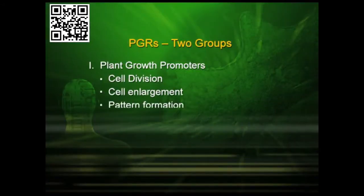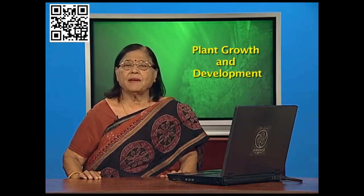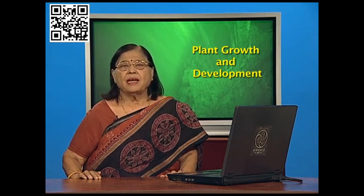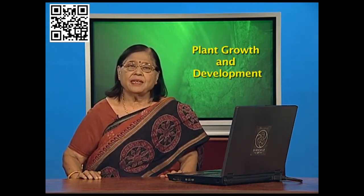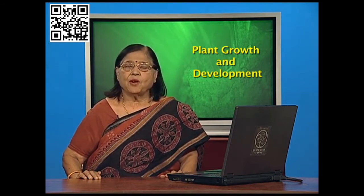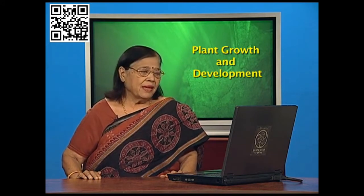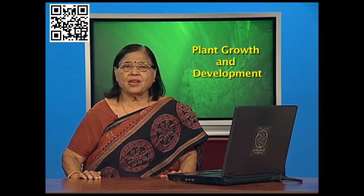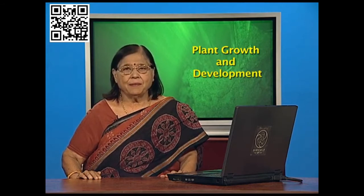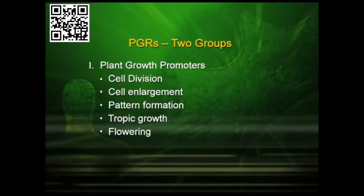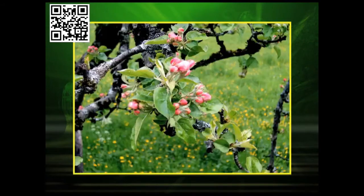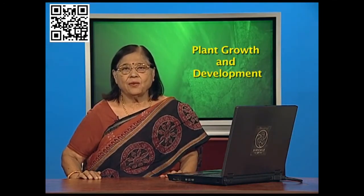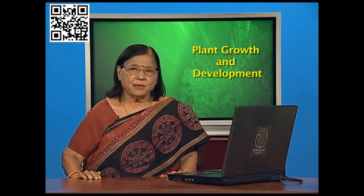Then there is pattern formation. In any tree there is some pattern: how branches will come, how many flowers will come in one twig, how many fruits will be hanging — that formation of the plant body is also controlled by these PGRs. Then there is tropic growth — phototropism, etc. — which is also influenced by PGRs. Flowering, which is an important aspect in flowering plants, is also induced by these regulators.